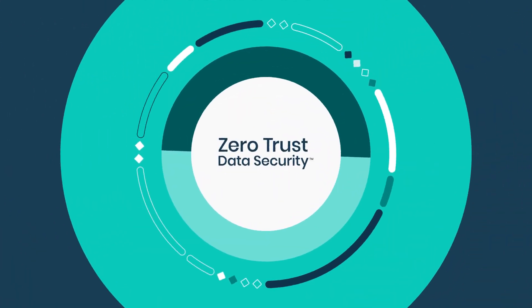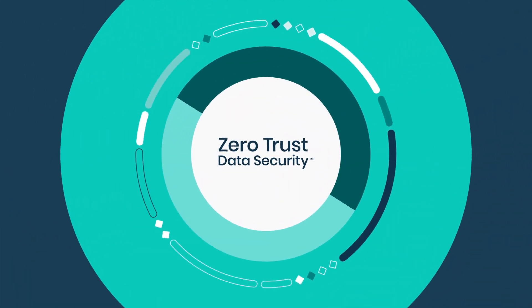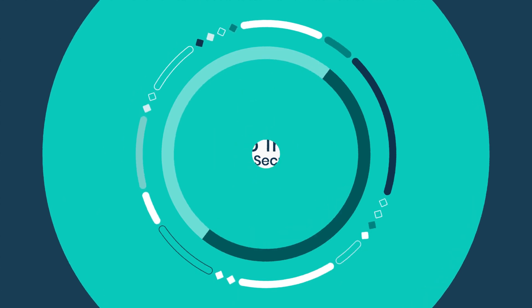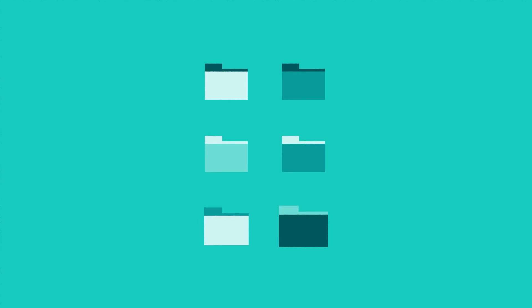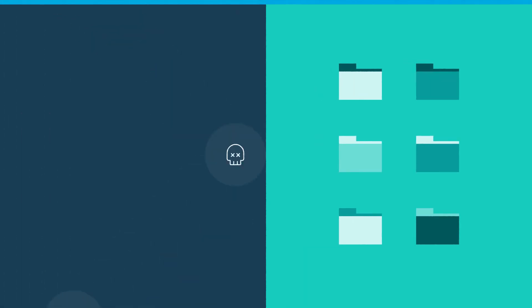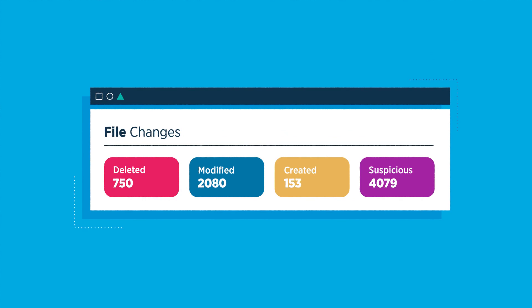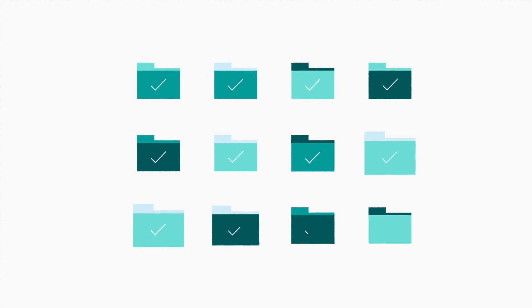Rubrik Zero Trust data security goes to the heart of data protection, keeping hackers out of your backup system, identifying ransomware activity, and making sure all data has a clean backup that can be recovered quickly.